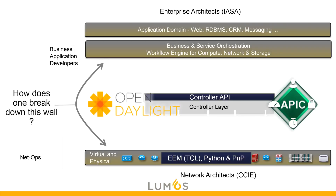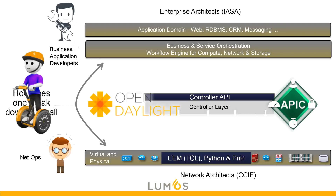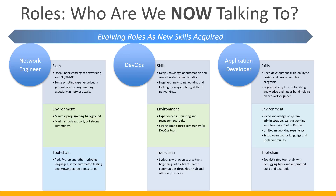So how does one break this wall down? You have your biz application developers, you have your NetOps guys. What we're really talking about is bringing teams together and cross-pollinating or cross-training. The dev guys help the net guys understand more about code and how to script things. The net guys help the dev guys understand the network operation side. And as we began talking about earlier, we form this new role of DevOps. So here's another example of how this might look and how these roles are evolving as new skills are acquired.